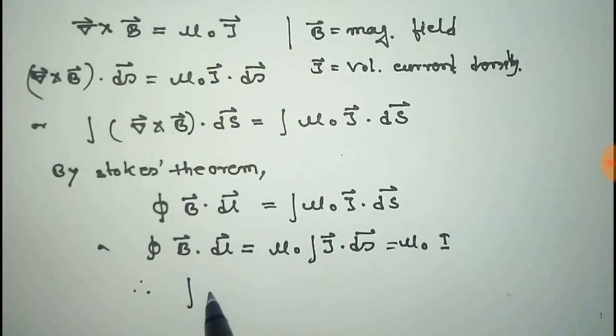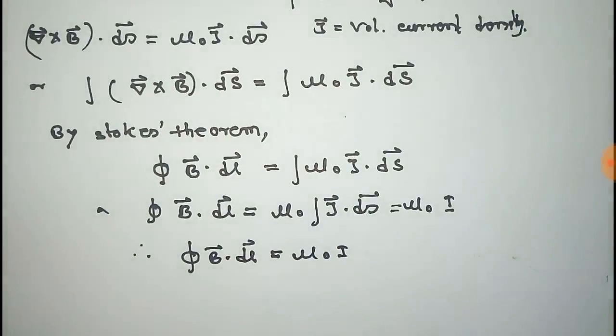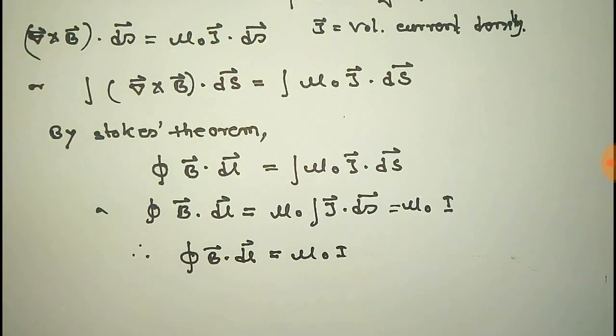Thus this is integral B dot dl is equal to μ₀ i. This is the Ampere circuit law that we have derived from curl B equal to μ₀ J.